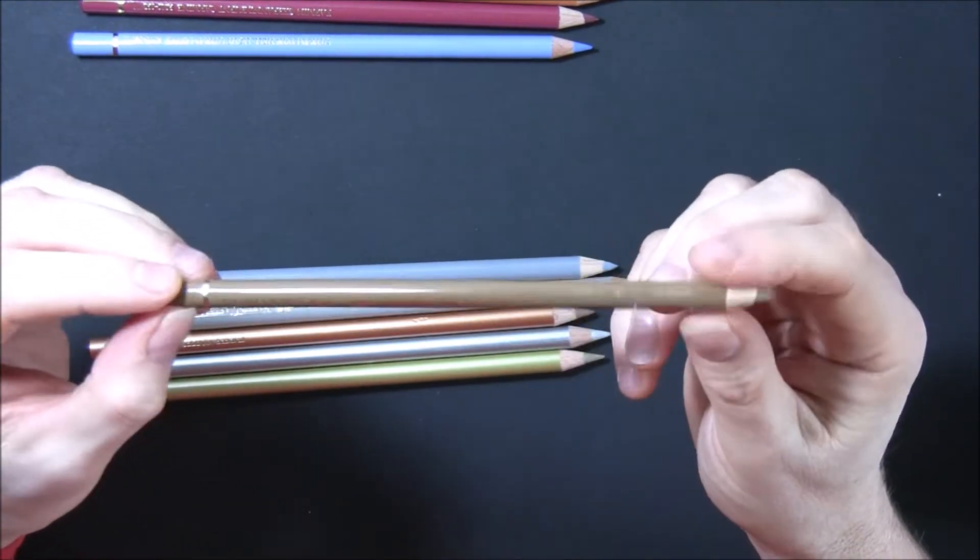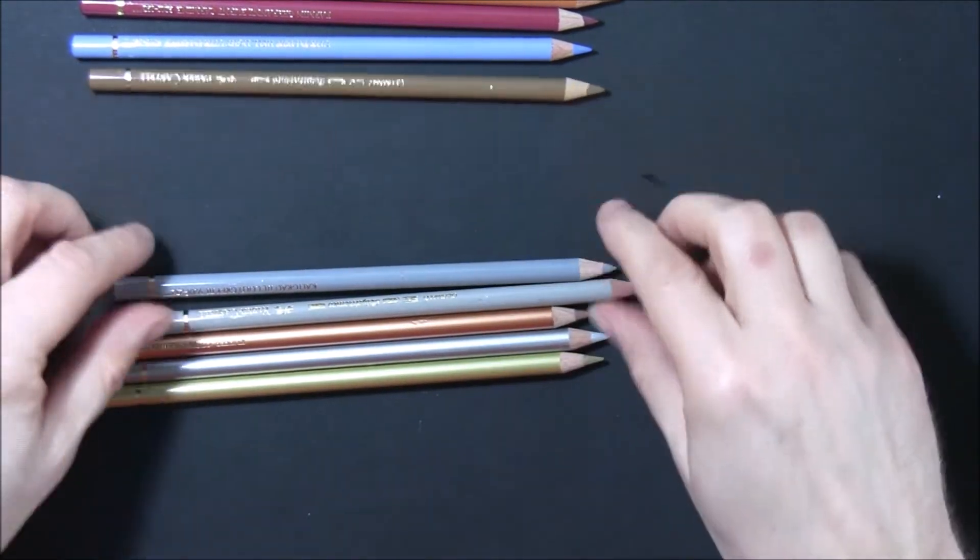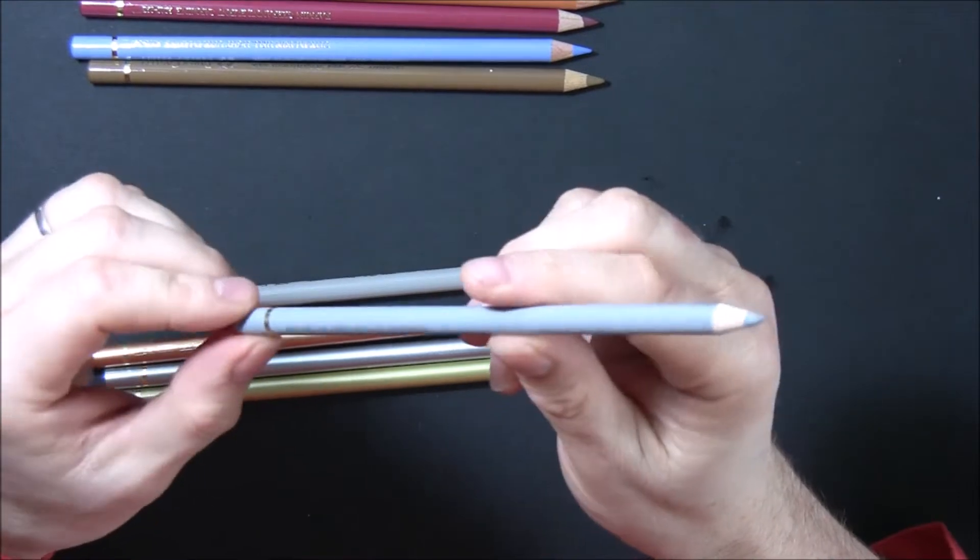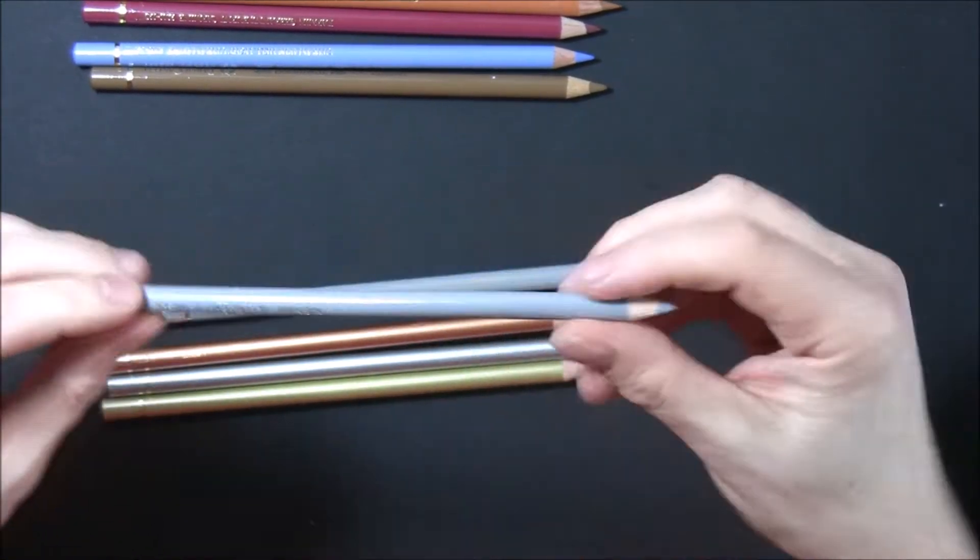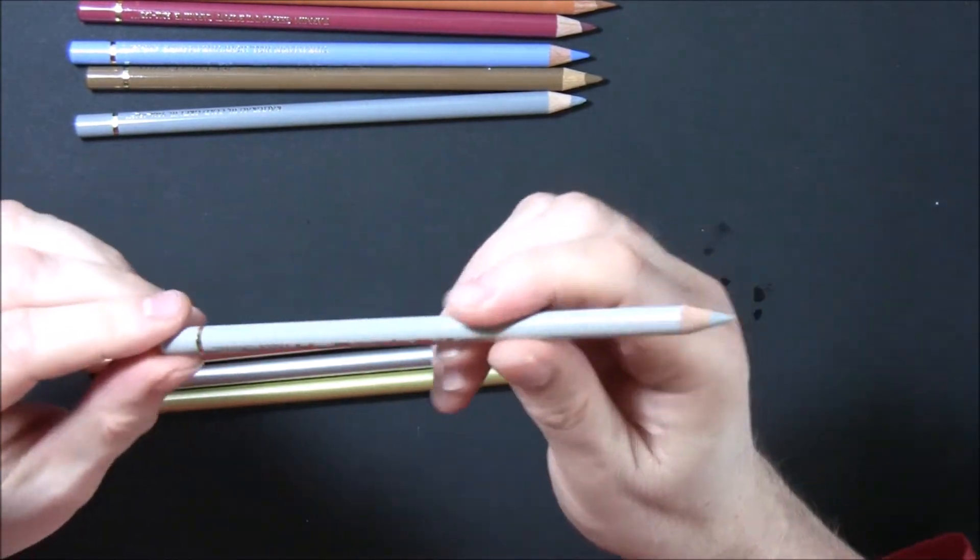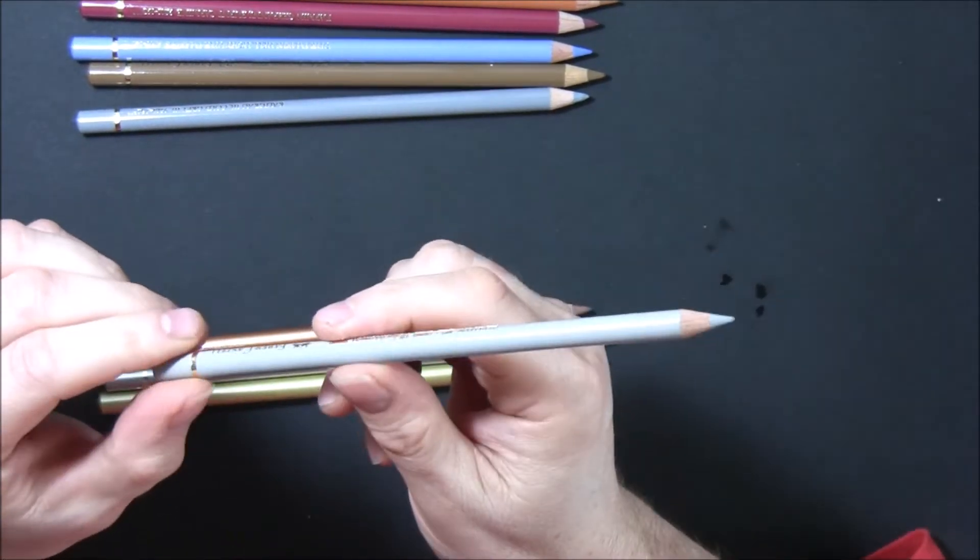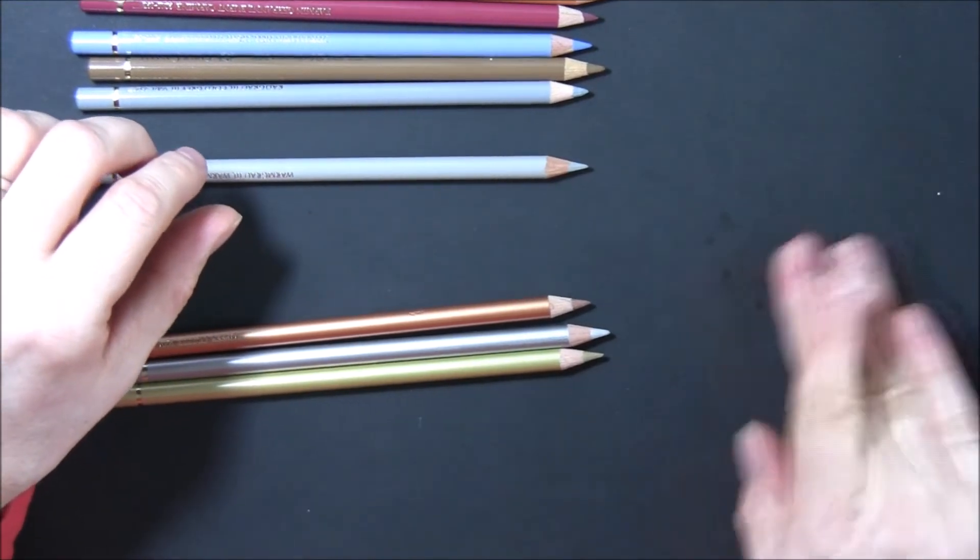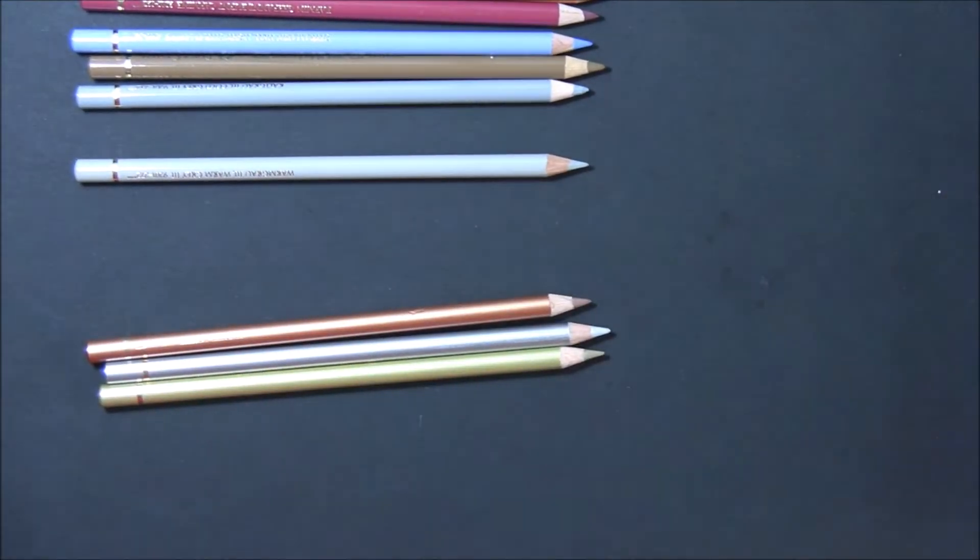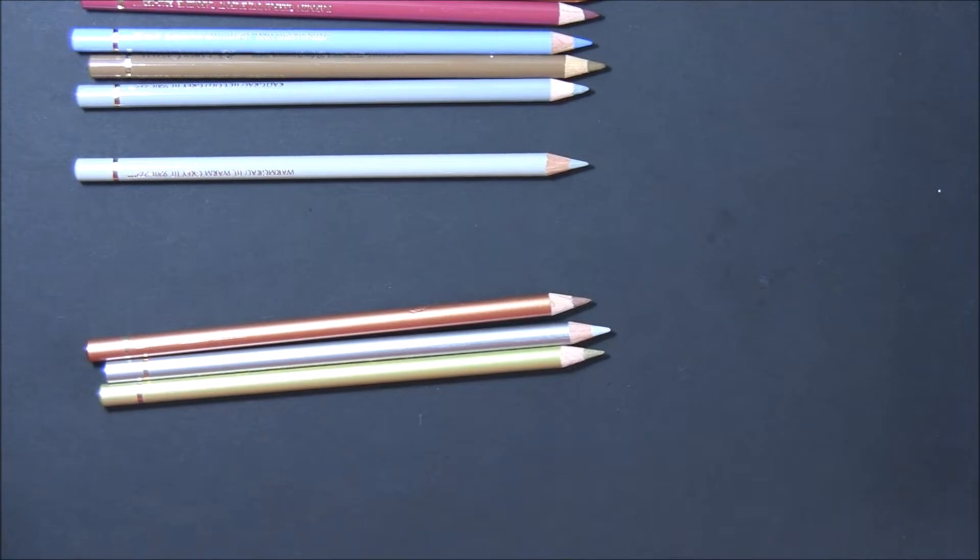I'll use that one for skies and stuff. This is 180 raw umber, that's one of my go-to pencils when I'm using browns or animal fur. This one is 232 cold grey three, and this is 272 warm grey three. Sorry, I just washed my hands and I've got a bit of water on the table, so I wasn't dribbling or anything.